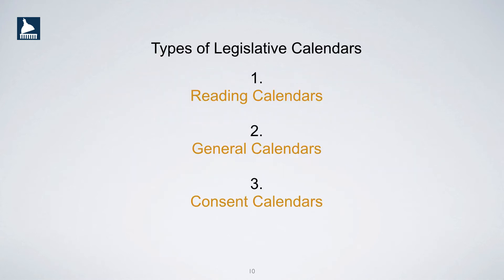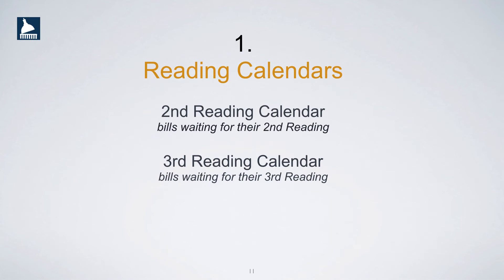Let's look at the three types of calendars that are used regularly in the Idaho House and Senate. First, we have reading calendars for bills waiting to be read for the second time and bills waiting to be read for the third time. The third reading calendar is the calendar people watch most closely because it is on the third reading that bills are debated and voted.